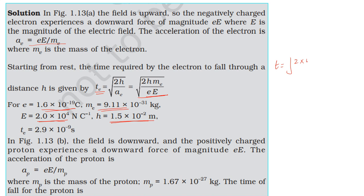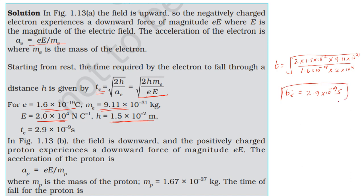For the electron: t = √(2 × 1.5×10⁻² × 9.11×10⁻³¹ / (1.6×10⁻¹⁹ × 2×10⁴)). The charge of the electron is 1.6×10⁻¹⁹ C and the mass of the electron is 9.11×10⁻³¹ kg. Substituting these values gives the time taken by the electron.